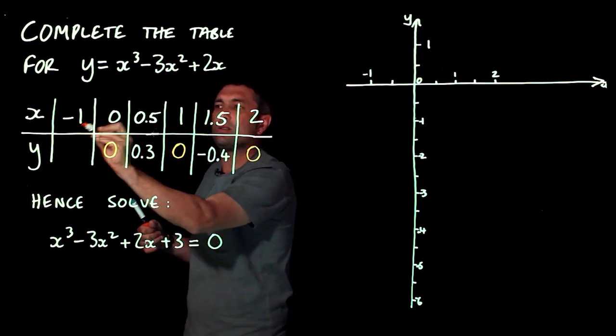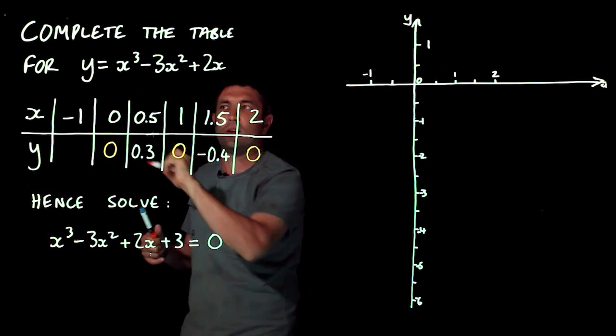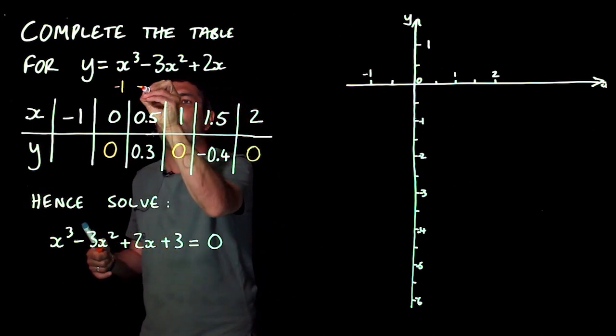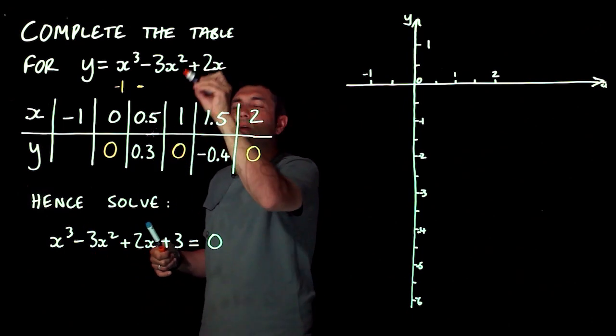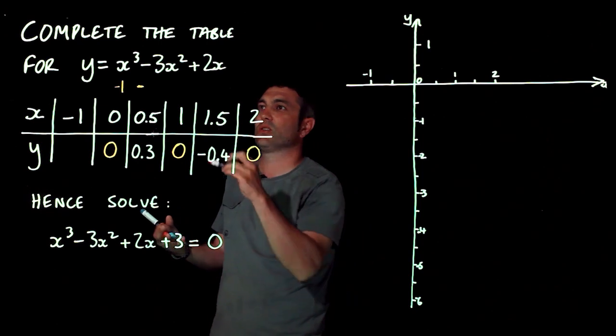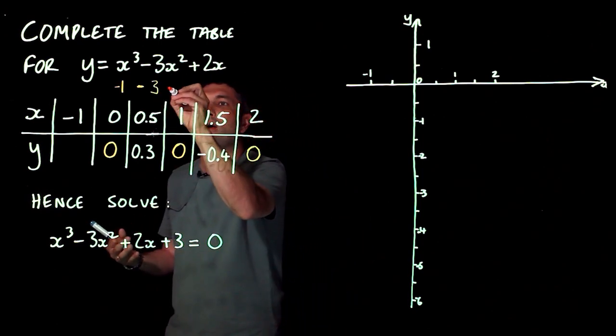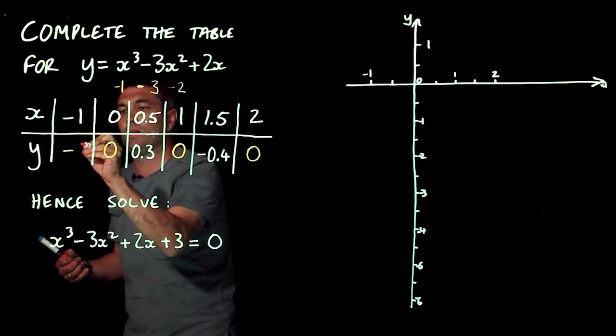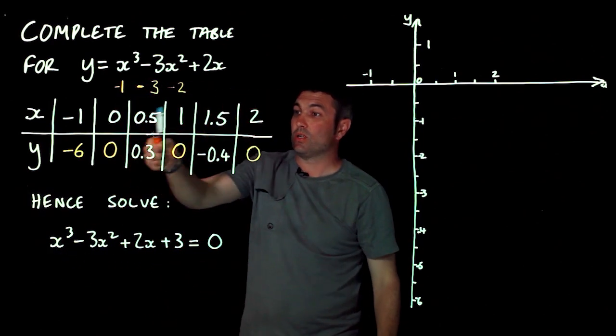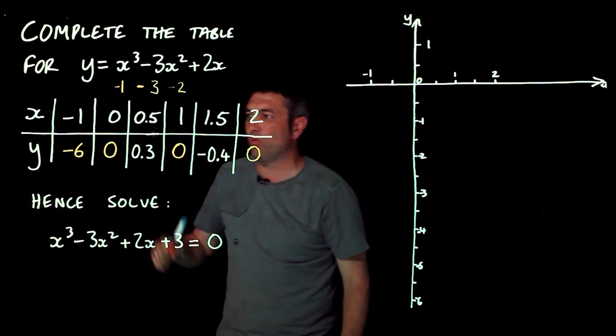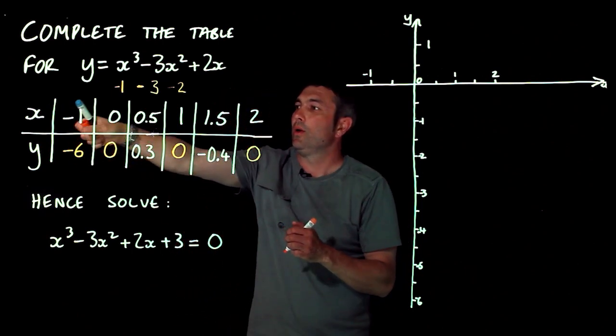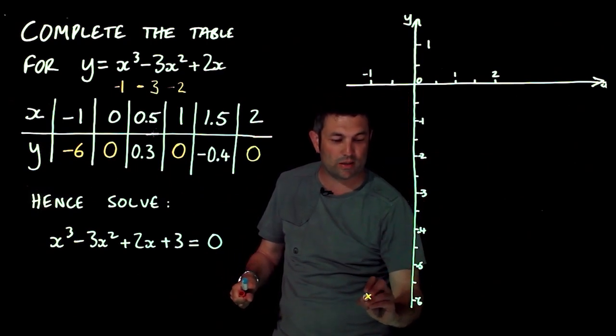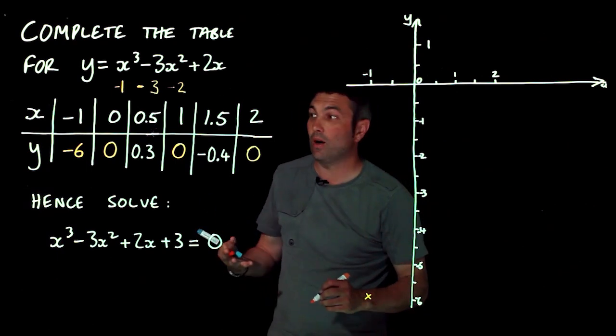Now, this is probably the nastiest one here, so I'm actually going to do a little bit of workings just underneath here. Minus one cubed is minus one. Take away—now, minus one squared, don't forget when you square a negative number, you get a positive answer. So three lots of one, minus three, and then two lots of negative one, minus another two. We should have minus six down there, and we've got a set of coordinates. No pattern in there. Always worth looking. Here we go. Negative one, negative six. That just fits on my axis, and then I know I've probably done it all right now.